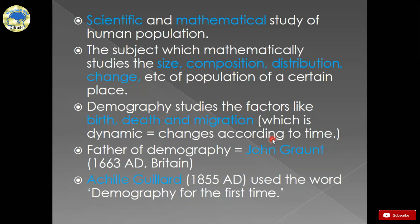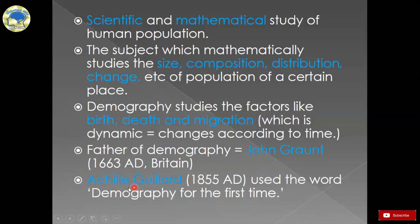If we move on to a short history of demography, we can see John Grant as the father of demography. John Grant is known as the father of demography. And who used the word demography for the first time? That person is known as Achille Gillard. In 1855, Achille Gillard used the word demography for the first time. This question can be asked as a very short question, so you have to remember who is known as the father of demography — John Grant — and who used the word demography for the first time — Achille Gillard.